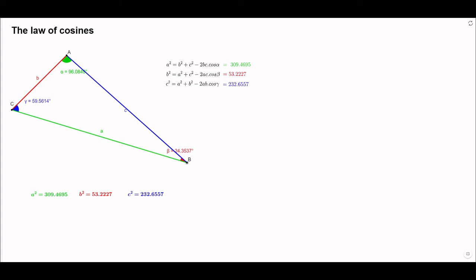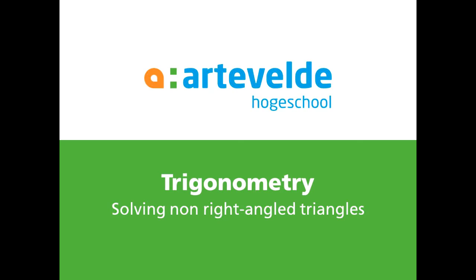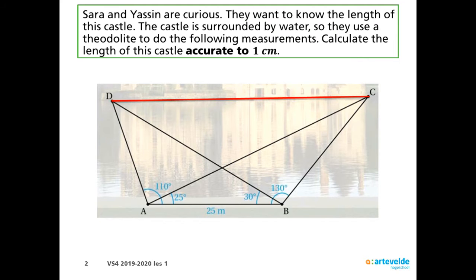The law of cosines says that if we know the length of two sides and the measure of the angle between them, we can calculate the length of the third side. It is written as: a squared equals b squared plus c squared minus 2bc cosine alpha. We are going to need both the law of sines and the law of cosines to solve this problem.